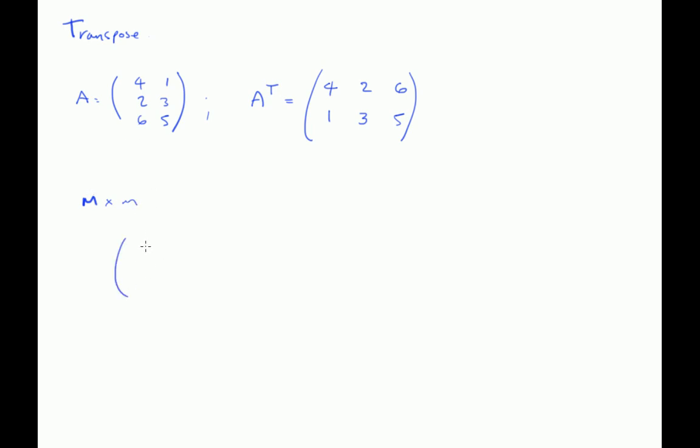So we might have a 3 by 3 matrix which is 1, 3, 5, 2, 6, 2, 4, 3, 1. When we transpose that matrix, we get a 3 by 3 matrix, but that's a square, the concept of a square matrix.